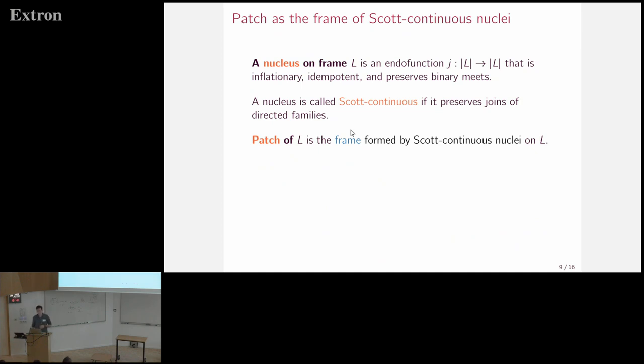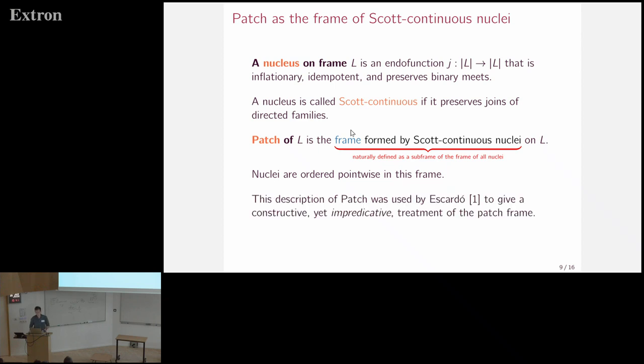And in our work, we use a slick definition of patch as the frame of Scott continuous nuclei on a given frame. So a nucleus on some frame is an inflationary, idempotent, and binary-meet-preserving endofunction. And the Scott continuity of a nucleus is the usual notion. And we define the patch of some frame L as the frame formed by Scott continuous nuclei on the frame. And as this is a restriction of the set of nuclei on the frame, it's naturally defined as a subframe of the frame of all nuclei on the frame. And nuclei are ordered point-wise in this frame. And this was previously used by Escardo to give a constructive but impredicative treatment of the patch frame.